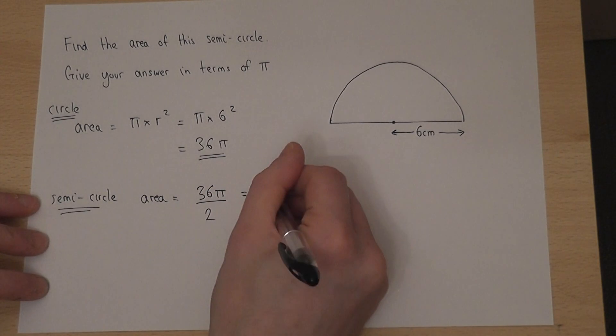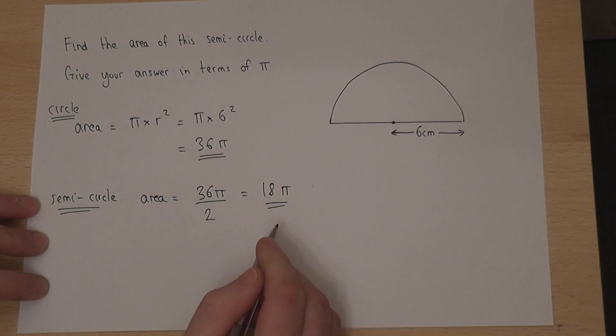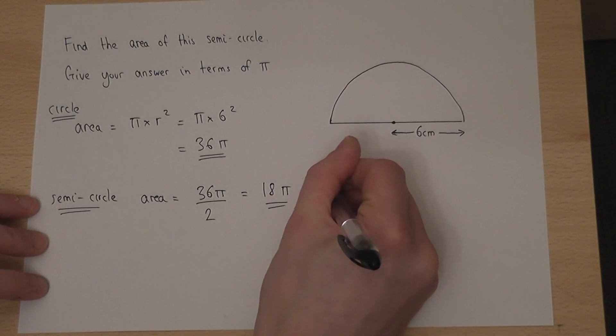And a half of 36 is 18. So the area of the full circle divided by 2 is 18pi centimeters squared.